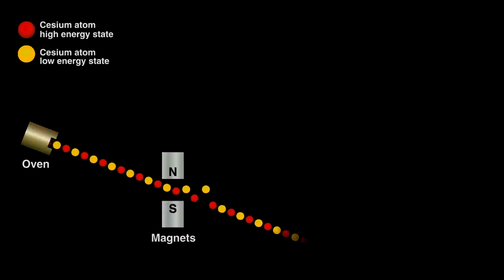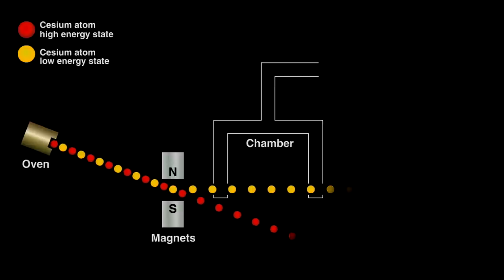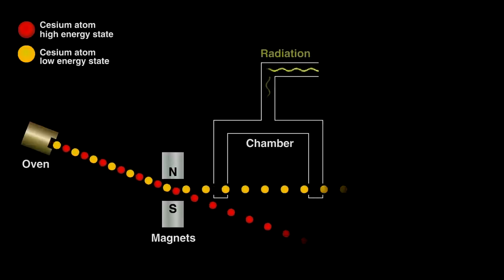We first flow it through a magnet, separating the two types, discarding the high energy ones, allowing the lower energy ions to pass into a chamber. Inside the chamber, we bombard the ions with just the right wavelength radiation to make them jump to higher energy.